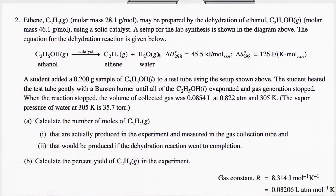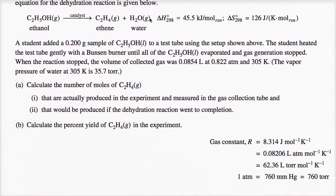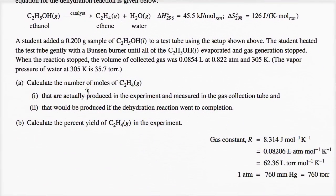Let's try to answer their questions. Calculate the number of moles of ethene: one, that are actually produced in the experiment and measured in the gas collection tube, and two, that would be produced if the dehydration reaction went to completion. Part B: calculate the percent yield of ethene in the experiment. Let's tackle part one first.